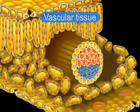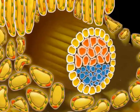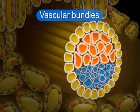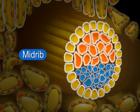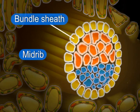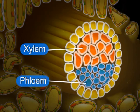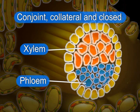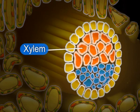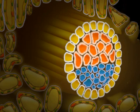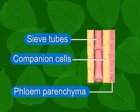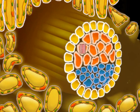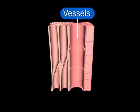Vascular tissues are present in the veins of the leaf, which represent the vascular bundles. The largest and oldest vein is found in the center of the leaf — it is known as the midrib. Each vein has a bundle sheath which encloses both xylem and phloem. Vascular bundles are conjoint, collateral and closed. Xylem is present towards the upper epidermis while phloem is towards the lower epidermis. Phloem consists of sieve tubes, companion cells and phloem parenchyma; phloem fibers are absent. Xylem consists of vessels and xylem parenchyma.